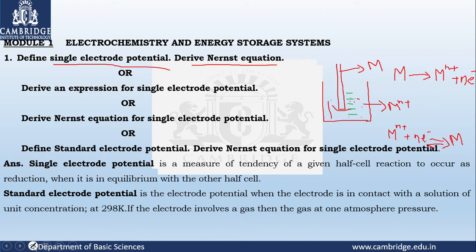The solution is going to have metal ions, which I will represent as positive charges. There exists a potential difference between these positive and negative charges. When a metal dissolves into the solution and releases electrons, those electrons attract the same number of positive charges and form a junction. This potential difference at the junction is called the single electrode potential.